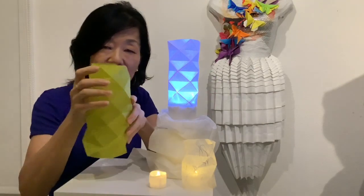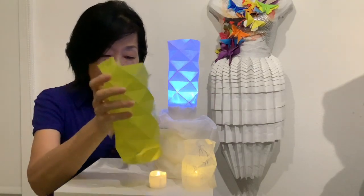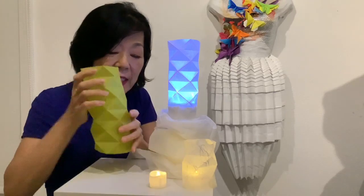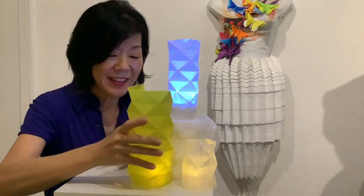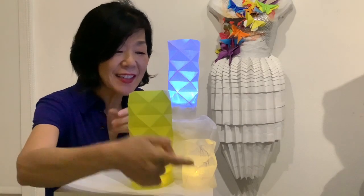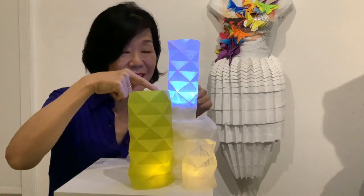This is an origami lamp shade. Inside is a tea light. This is a half side and inside of this is actually the flashlight.